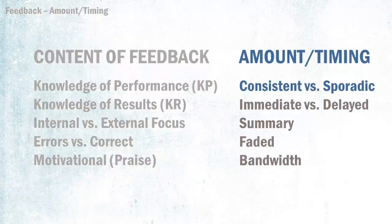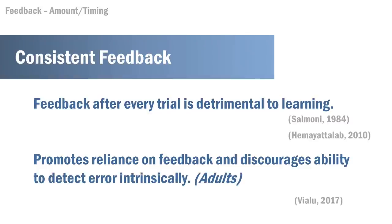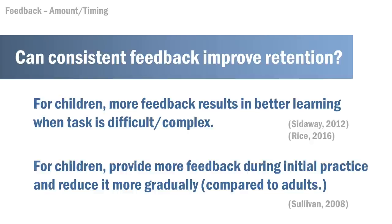Now we'll look at the amount and timing of feedback. Findings show that more frequent feedback interferes with learning. One study with children with cerebral palsy ages 5 to 17 performing a dart throw found that the group that received 100% knowledge of results feedback for all their trials did not perform as well for long-term learning. This may be because consistent feedback promotes reliance on that feedback and discourages the individual's ability to detect error intrinsically. Interestingly, with children, more feedback actually results in better learning when the task is difficult or complex, so the frequency of feedback will depend on task difficulty and the age and skill level of the learner.